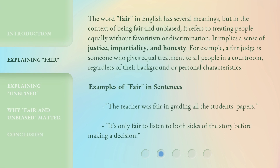The word 'fair' in English has several meanings, but in the context of being fair and unbiased, it refers to treating people equally without favoritism or discrimination. It implies a sense of justice, impartiality, and honesty. For example, a fair judge is someone who gives equal treatment to all people in a courtroom, regardless of their background or personal characteristics.